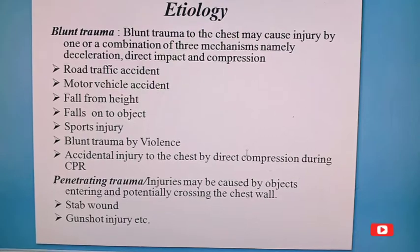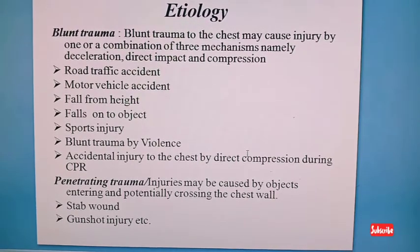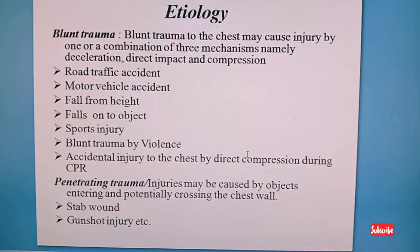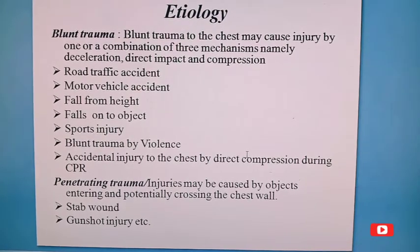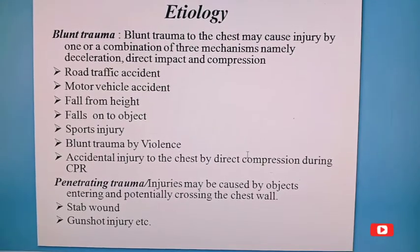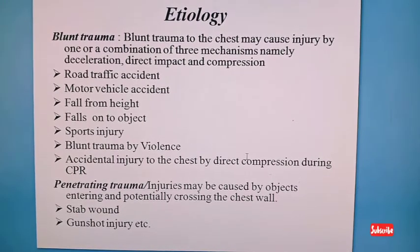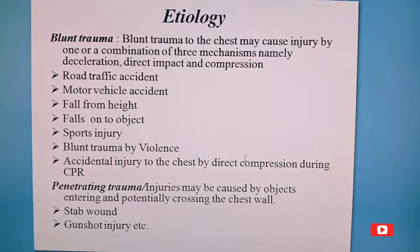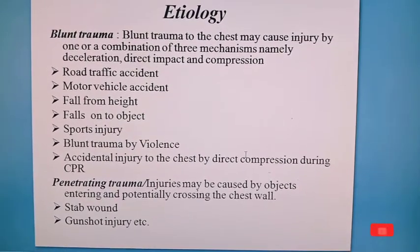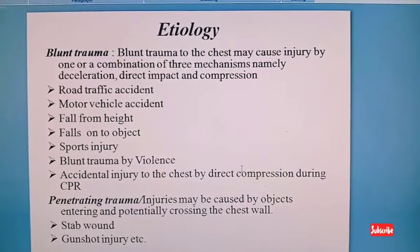Blunt trauma causes include road traffic accidents, motor vehicle accidents involving the steering wheel or belt, fall from height, fall onto an object, sports injury, blunt trauma by violence, and accidental injury due to direct compression during CPR. Penetrating trauma may be caused by an object entering and crossing the chest wall — that is stab wound, arrow wound, gunshot injury, etc.